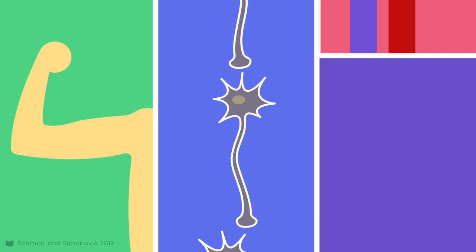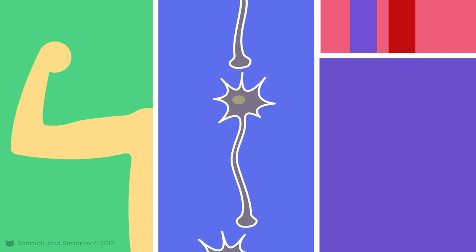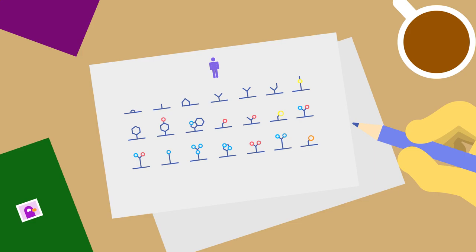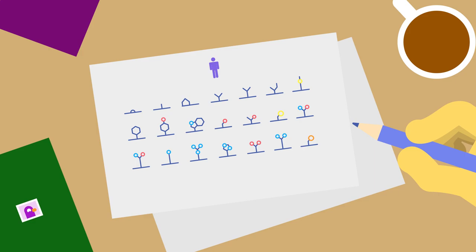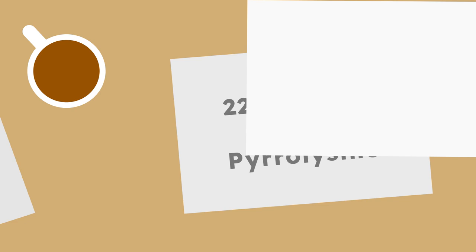Technically, there are over 500 amino acids if we consider funky modifications, but only 21 are needed to translate human proteins. If we consider all domains of life, then we need a final 22nd amino acid. But that's a story for another day. We'll see you next time.